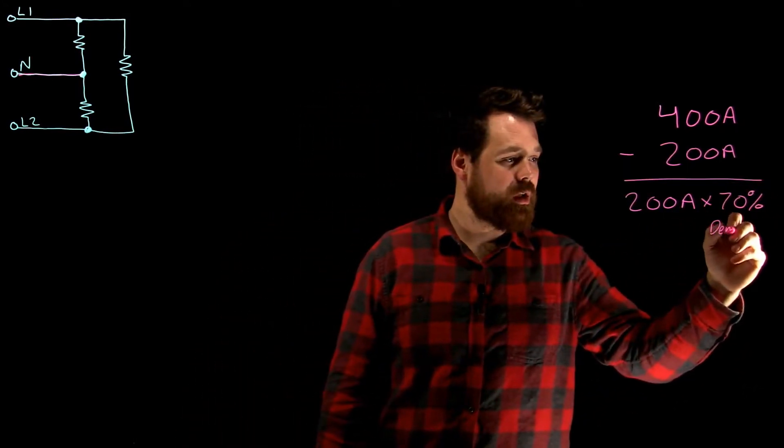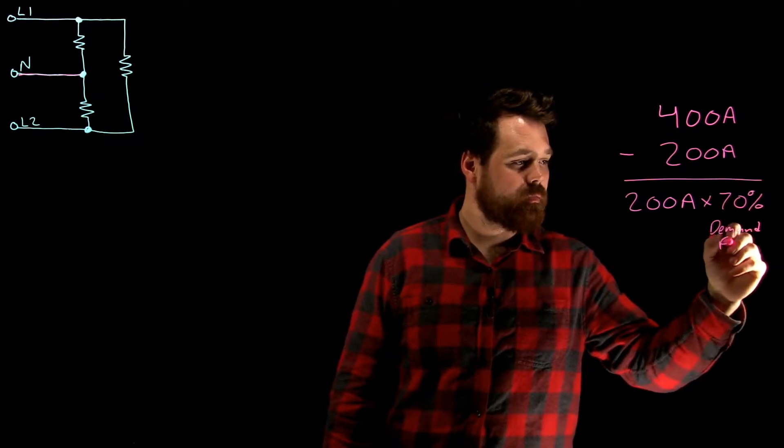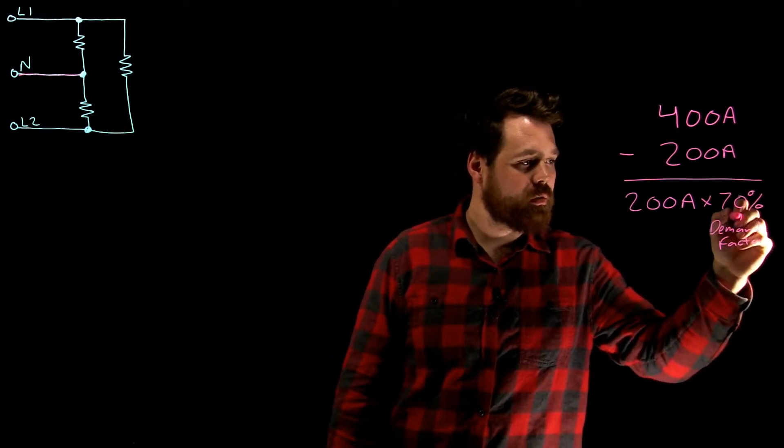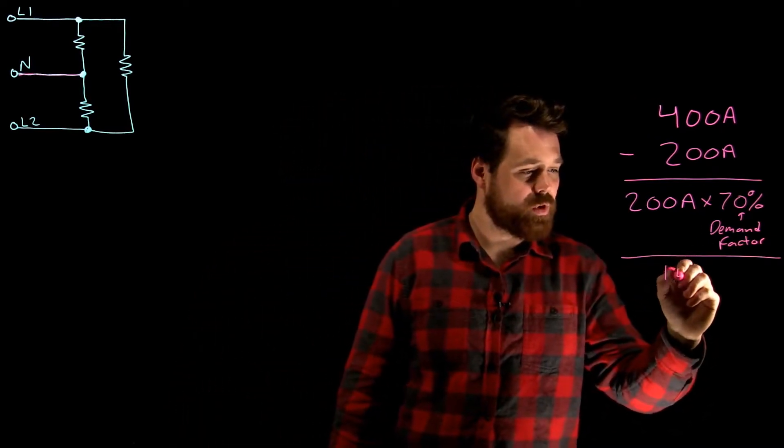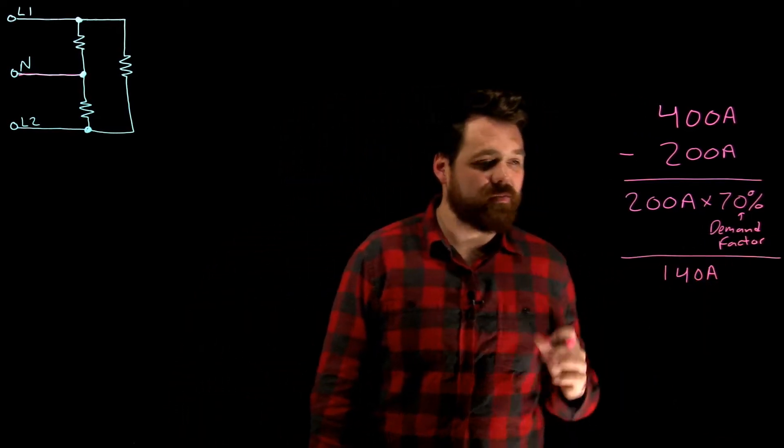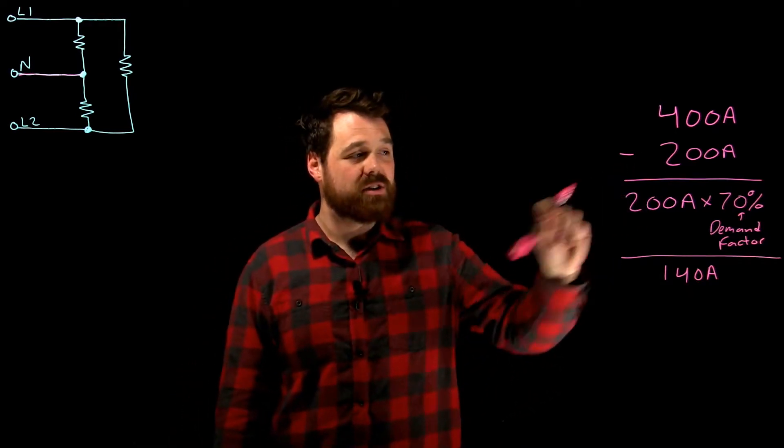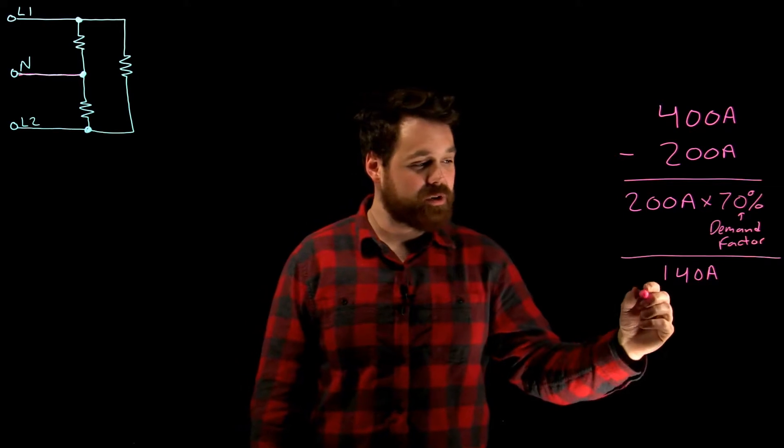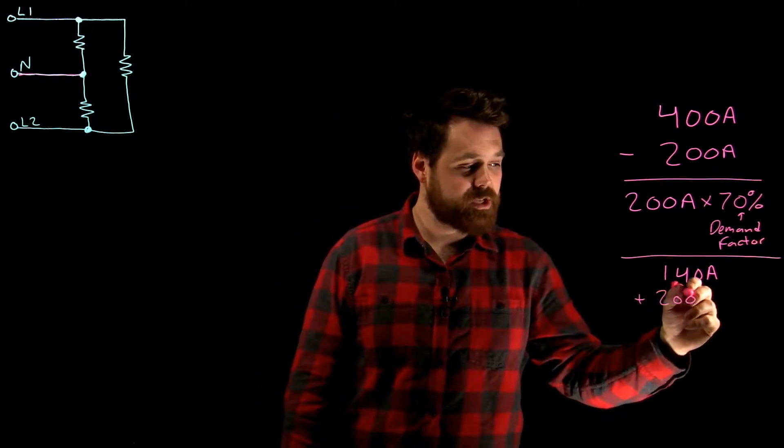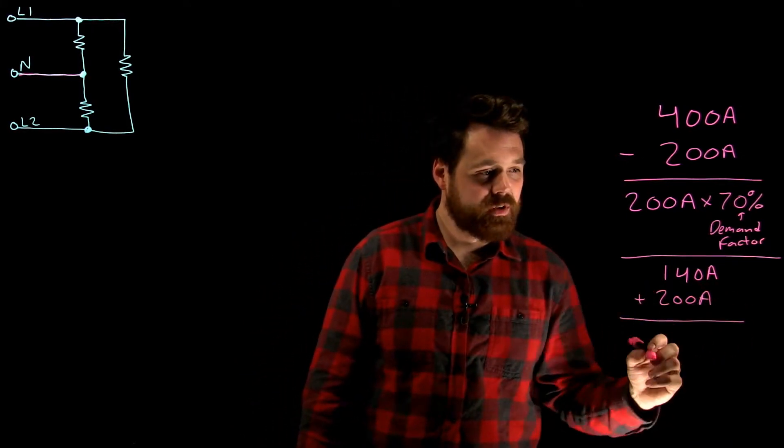We multiply that by the 70% demand factor. That's the demand factor, right? And that is going to give us in this case 140 amps. So we've applied a demand factor to everything exceeding 200 amps. What we need to do now is we need to add back in that original 200 amps that we took out.